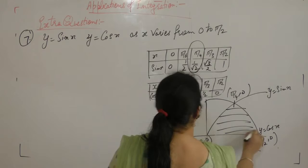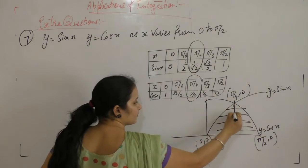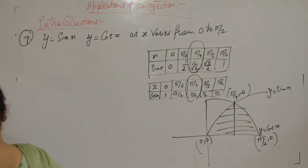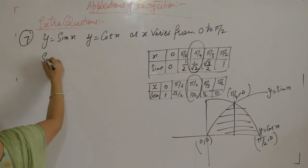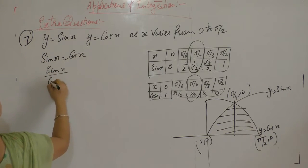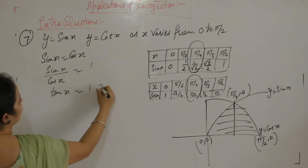Now we are going to find this shaded portion. Write down. Y is equal to sin x and cos x, sin upon cos, and x is equal to 1, so x is π by 4.